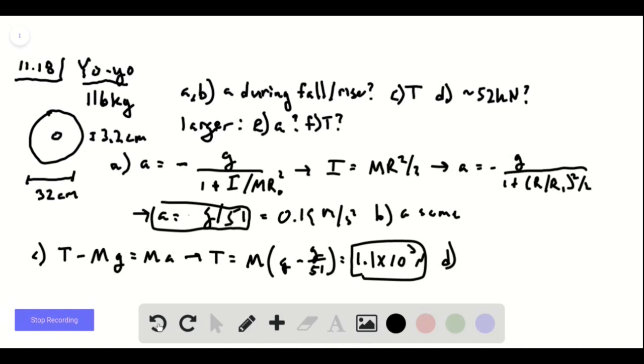And this is equal to 1.1 times 10 to the third Newtons. And so for part D, we can see that this is 1/50th plus of the breaking point of the cable. So it's well under the maximum tension.